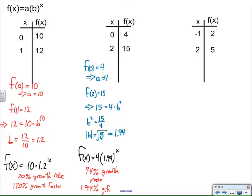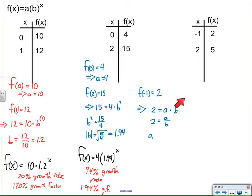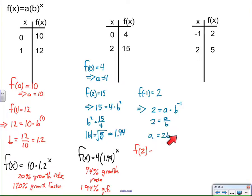Moving on to the last one. This is the most challenging because I do not know my a value. However, if I continue with the same pattern of reasoning and use my x and y in the equation, I still have both a and b unknown. This gives me a relationship between a and b. Recall that b to the negative 1 is 1 over b, so instead of a times b to the negative 1, I write it as a over b, then multiply both sides by b. So a is equal to 2 times b.